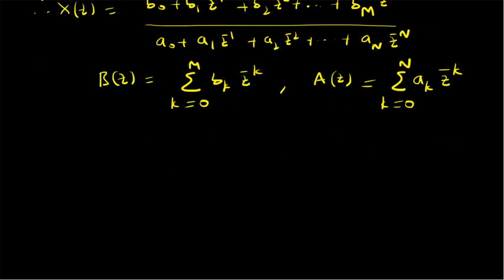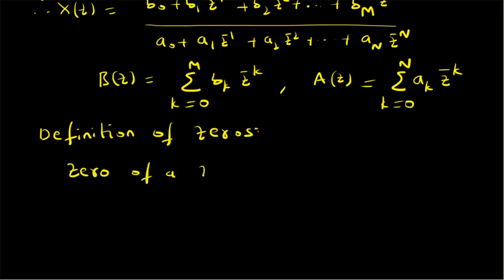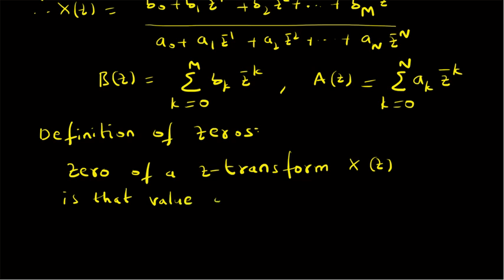Now let us define the zeros and poles of this Z transform. A zero of a Z transform X of Z is that value of the variable Z at which X of Z becomes zero. Basically, whenever X of Z becomes zero, the location at which this occurs is defined as a zero.